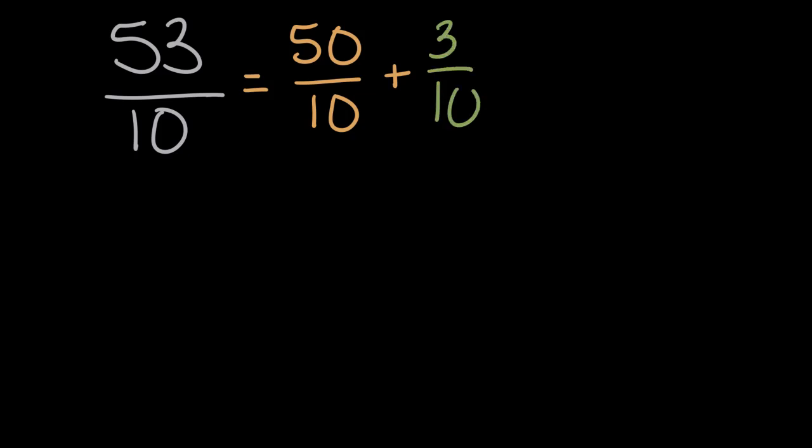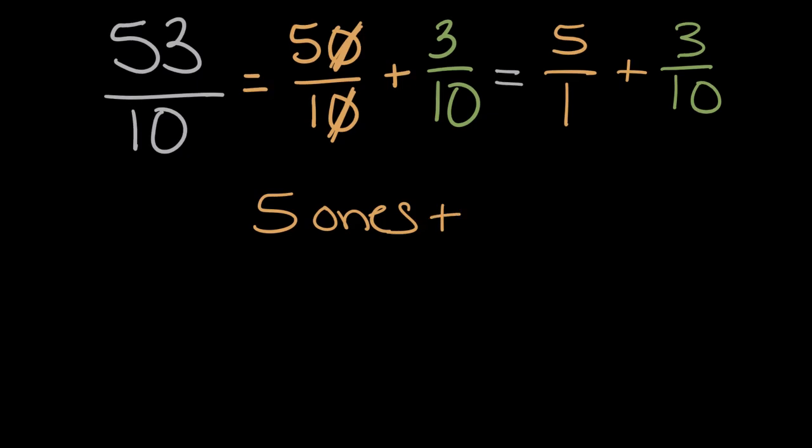And again, we can simplify. Fifty tenths can be divided by ten. So instead of fifty tenths, we'll say five ones plus we still have those three tenths. And now we've got this to place value. Five ones is five ones plus three tenths is three tenths.